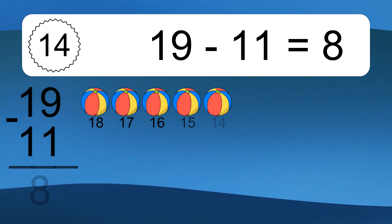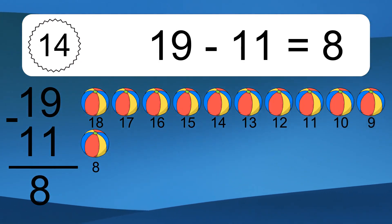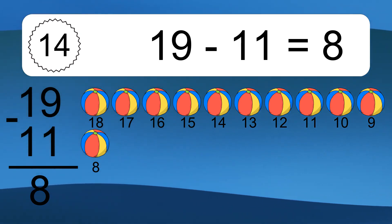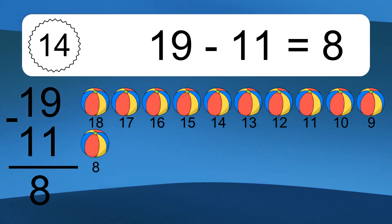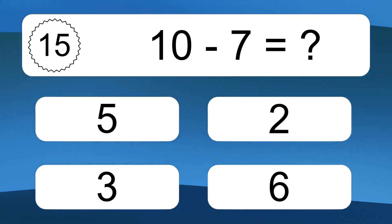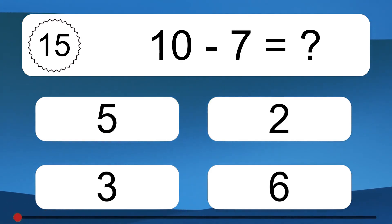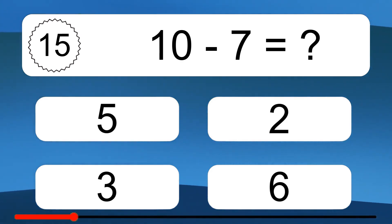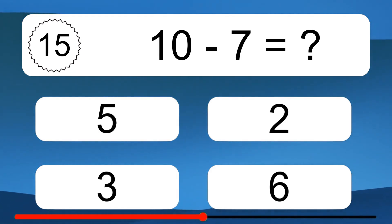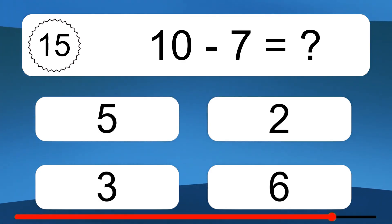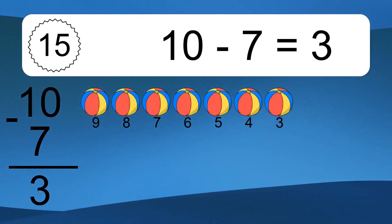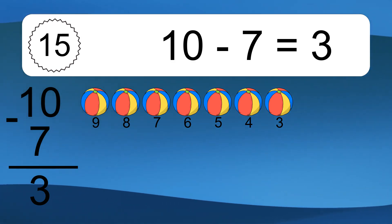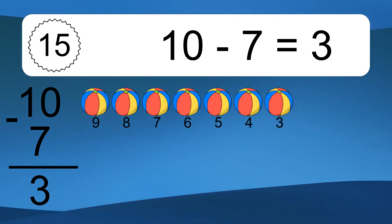19 minus 11 equals what? 19 minus 11 equals 8. Let's count it: 18, 17, 16, 15, 14, 13, 12, 11.